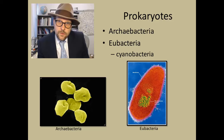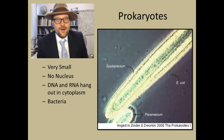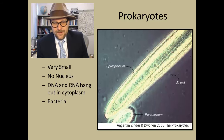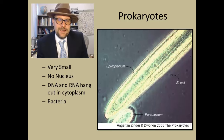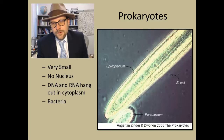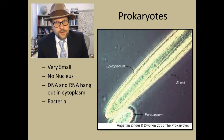Prokaryotics are very small organisms — super tiny. This is a picture of a paramecium and some eukaryotic microorganisms, with E. coli shown for scale — super tiny. There's no nucleus, and the DNA and RNA hang out inside the cell in what's called the cytoplasm. These include bacteria — the bugs that sometimes make you sick, the ones that grow easily on petri dishes. These are the prokaryotic organisms.